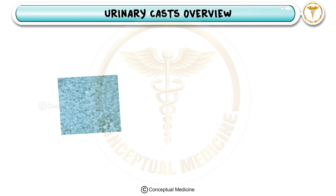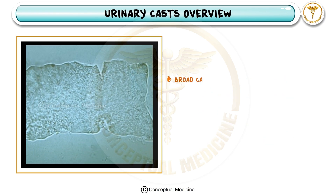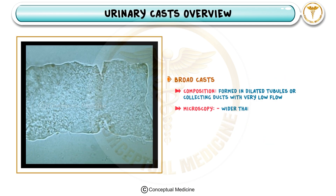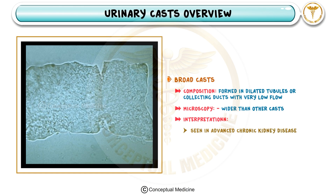Finally, broad casts are wider than other casts due to their formation in dilated tubules or collecting ducts with very low urine flow. These casts are a hallmark of advanced chronic kidney disease and suggest severe tubular atrophy and damage.